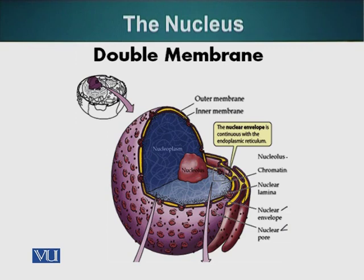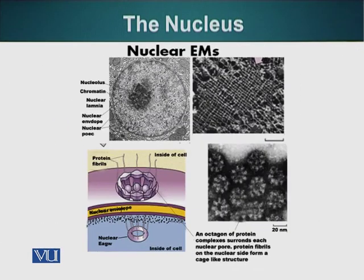Now let's look at other features of the nucleus. The nuclear pore has an octagonal symmetry, meaning it is made up of eight similar proteins arranged to form the periphery of the hole in the nucleus. The proteins that make up the nuclear pore are very selective about which molecules they allow in and which molecules they allow to leave. Small molecules can pass through these nuclear pores very easily, however larger molecules are regulated.